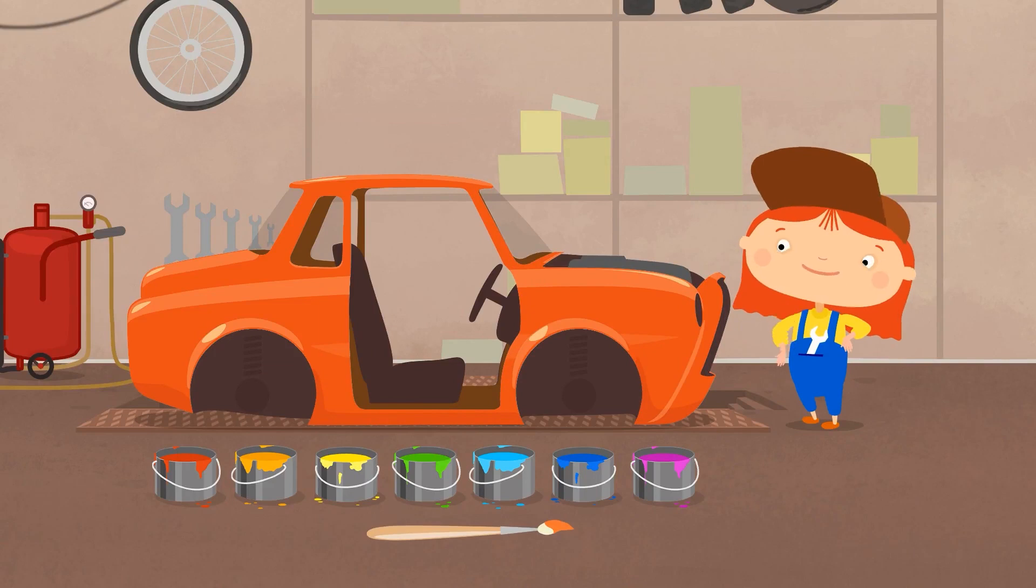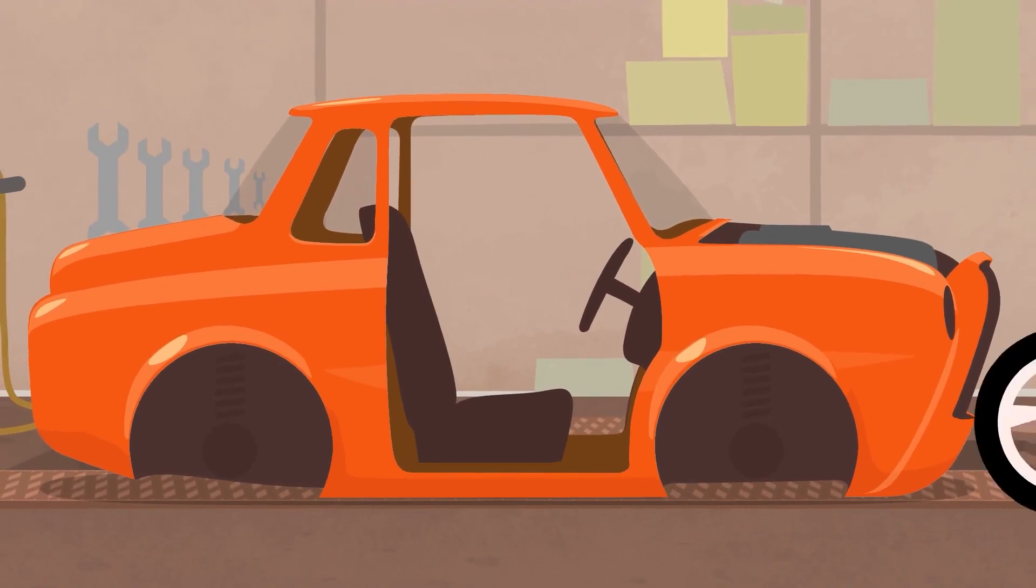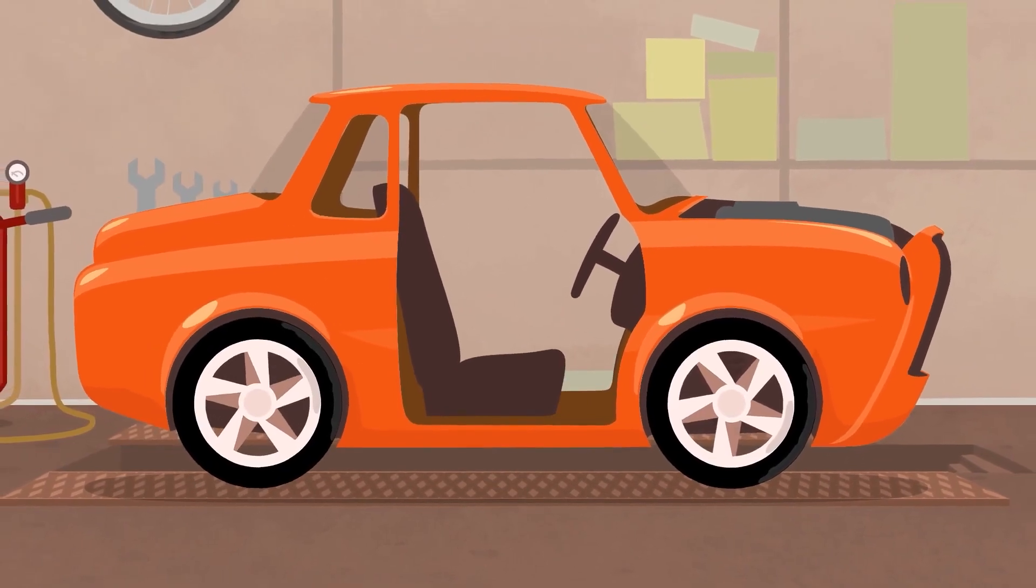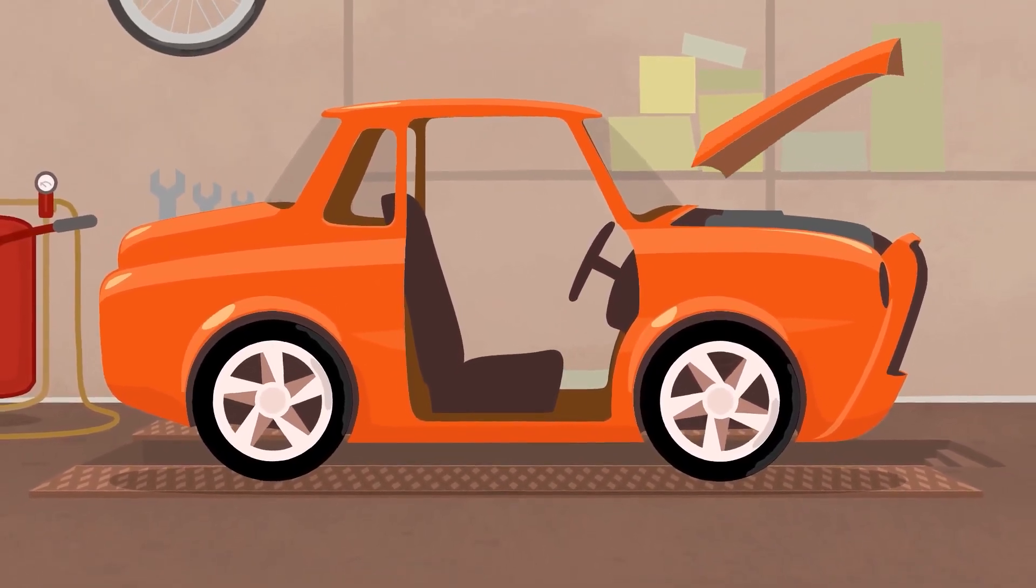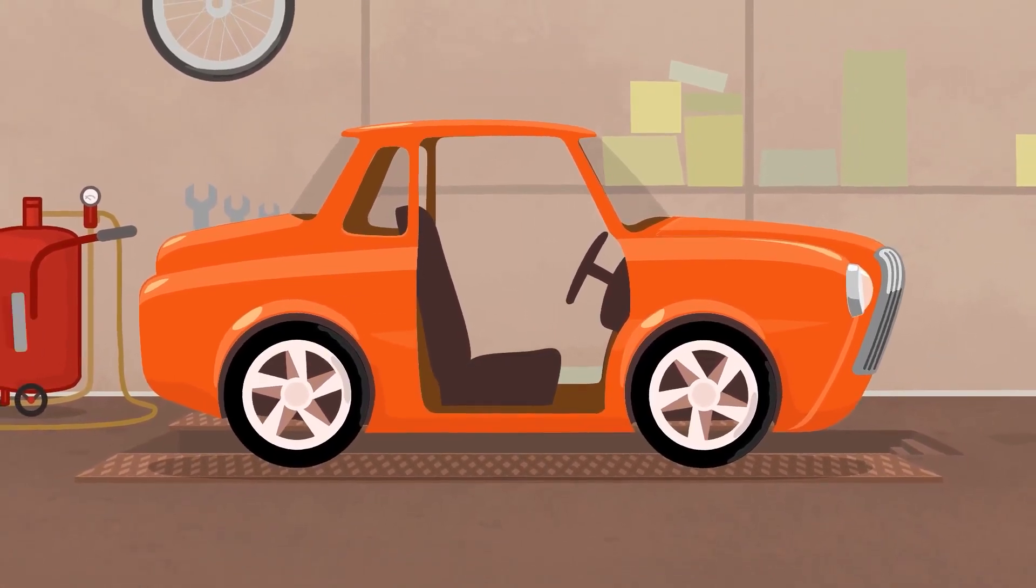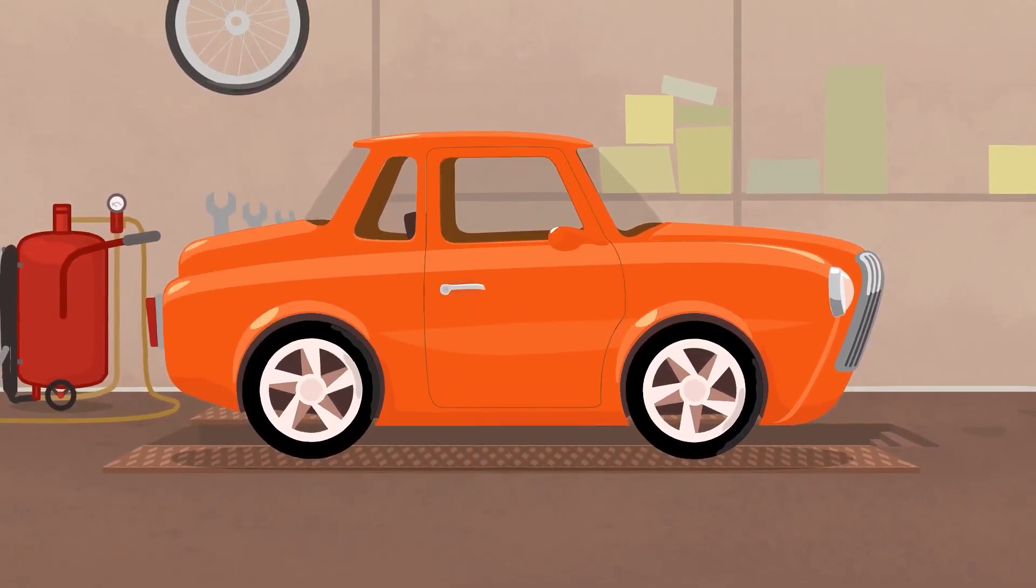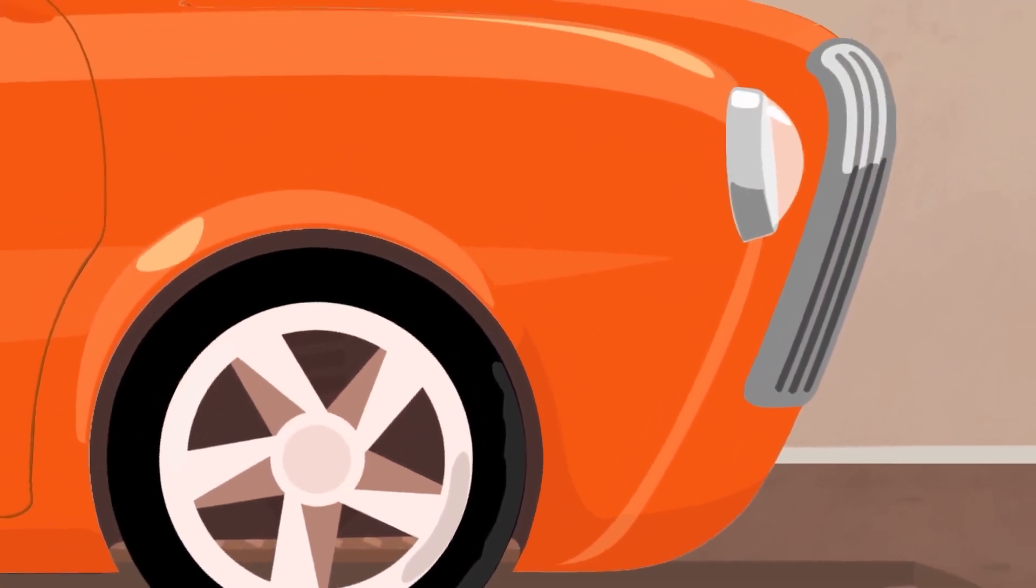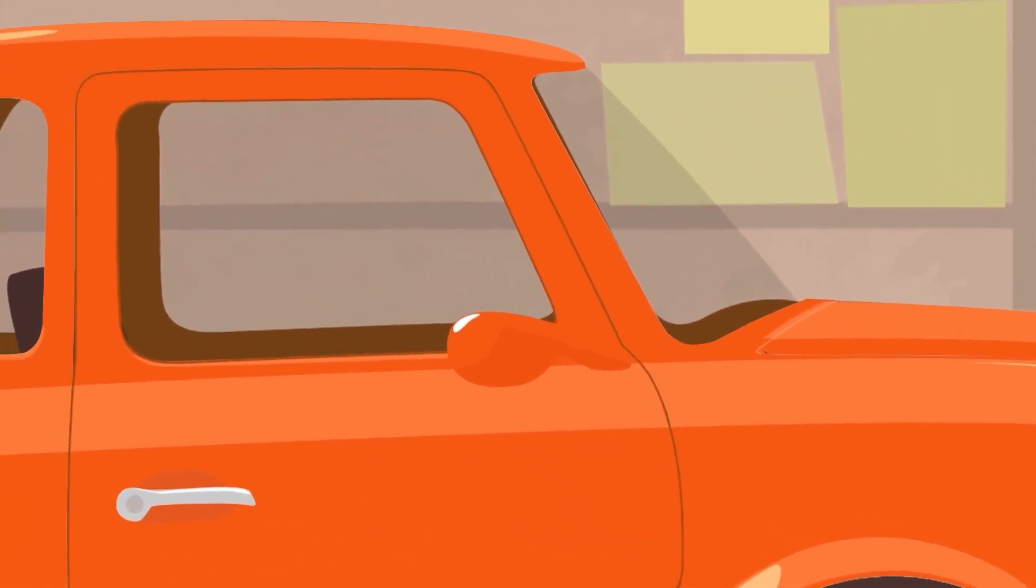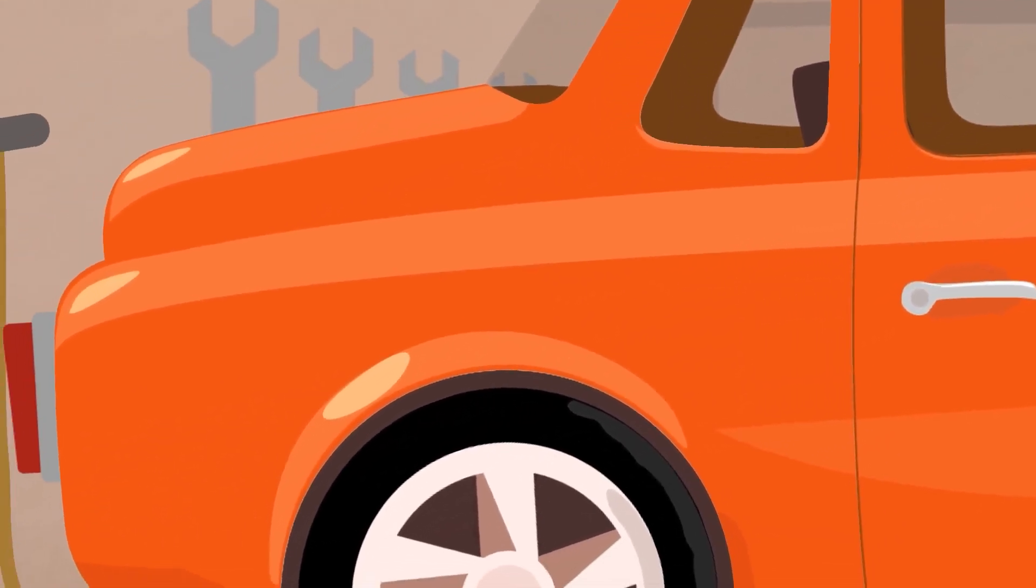Now let's reattach the removed parts. New wheel. The hood. The radiator grill. Front lights. And rear lights. And the doors. Of course. The car has turned out bright and shiny. Like an orange.